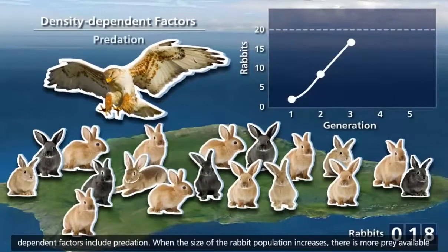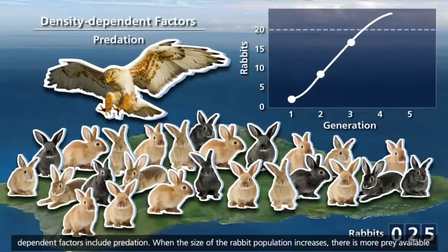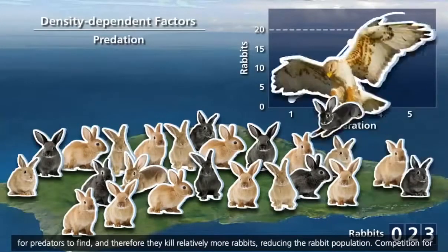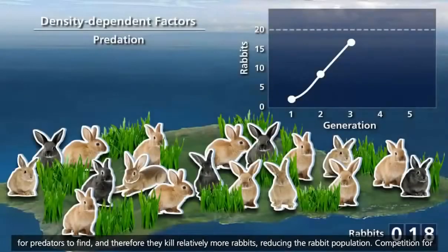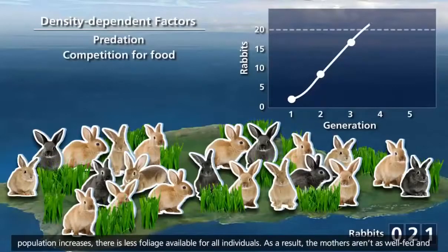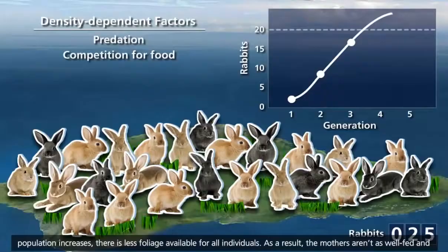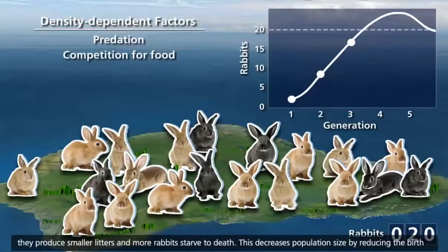Density-dependent factors include predation. When the size of the rabbit population increases, there is more prey available for predators to find, and therefore they kill relatively more rabbits, reducing the rabbit population. Competition for food is also a density-dependent factor that limits population growth to the carrying capacity. As the rabbit population increases, there is less foliage available for all individuals. As a result, the mothers aren't as well fed, they produce smaller litters, and more rabbits starve to death — decreasing population size by reducing the birth rate and increasing the number of deaths.